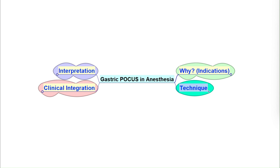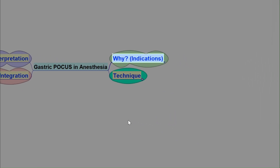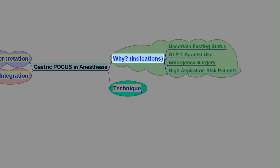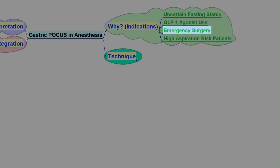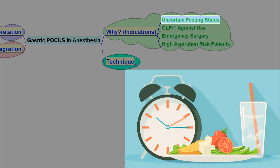Why should we add this to our pre-op checklist? The answer is risk stratification. We use gastric POCUS primarily in three scenarios. First, and most commonly, in patients with uncertain fasting status — think trauma, pediatric, or confused patients.